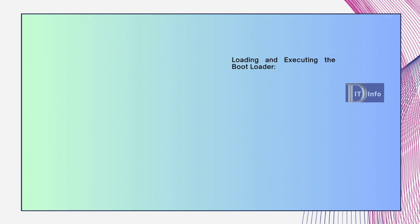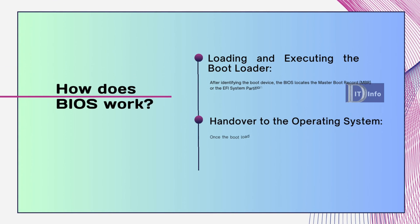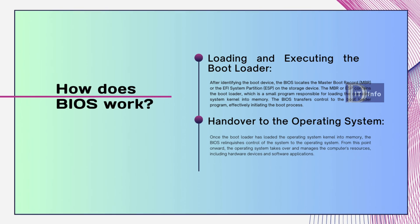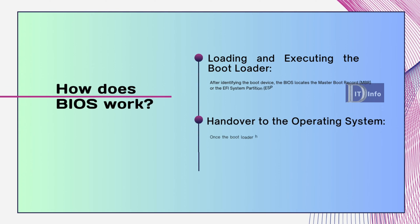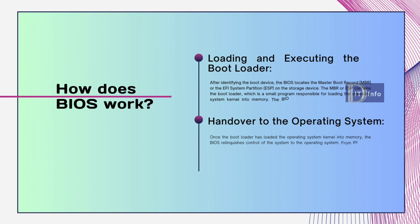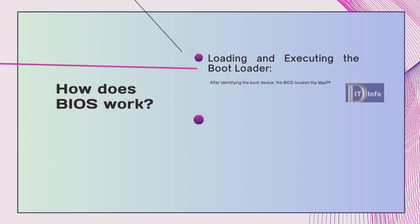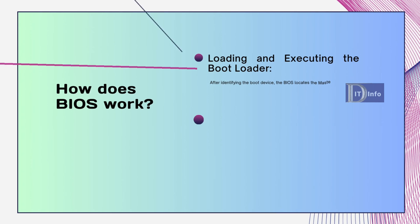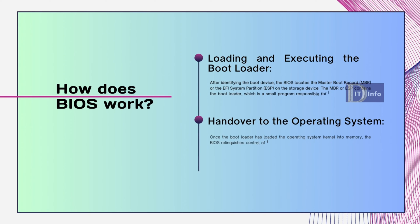After identifying the boot device, the BIOS locates the Master Boot Record (MBR) or the EFI System Partition (ESP) on the storage device. The MBR or ESP contains the bootloader, a small program responsible for loading the operating system kernel into memory. The BIOS transfers control to the bootloader, effectively initiating the boot process. Once the bootloader has loaded the OS kernel into memory, the BIOS relinquishes control to the operating system, which then manages the computer's resources including hardware devices and software applications.